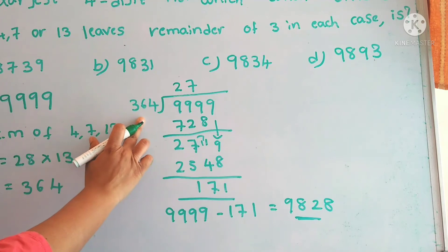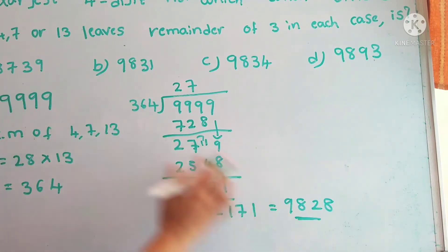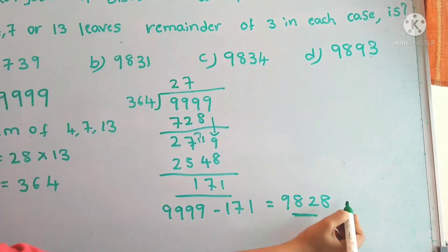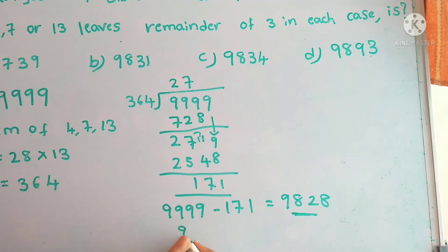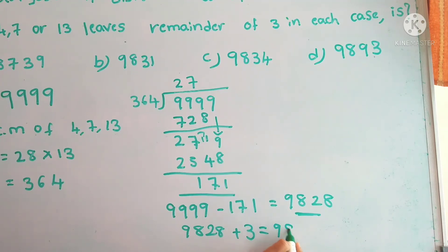So this number is exactly divisible by 364. But in the question, these three numbers leave remainder of 3 in each case. So now we have to add the 3 to 9,828. It would be 9,831.